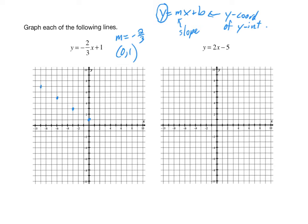But also the line extends down to the right, so we could also go down 2 and right 3 to continue this line. Let's plot those points. Even though you don't need all these points to draw the line — technically you only need two points — we can see a nice, clear, articulate line that represents the equation y equals negative two-thirds x plus 1.